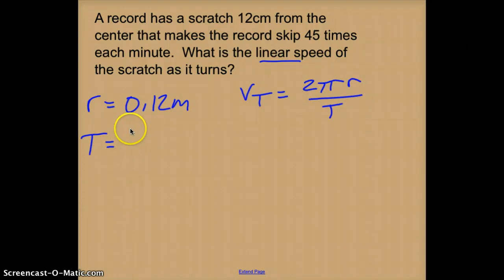My time period is 1 over frequency, so that means it's going around each minute, so that's 60 seconds. Convert that to seconds, and it goes around 45 times. So my time period is going to be 60 divided by 45, which is 1.33 seconds.